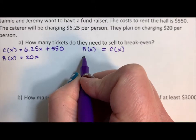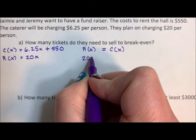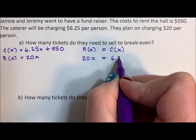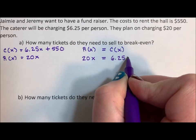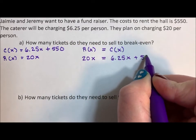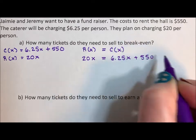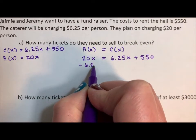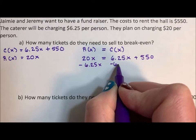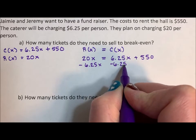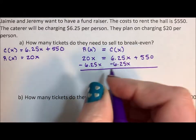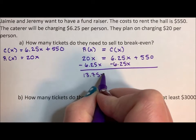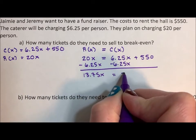So when is 20x equal to 6.25x plus 550? We subtract 6.25x from both sides and we get 13.75x is equal to 550.